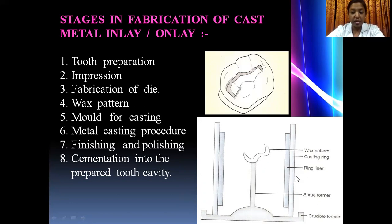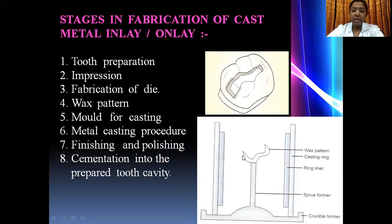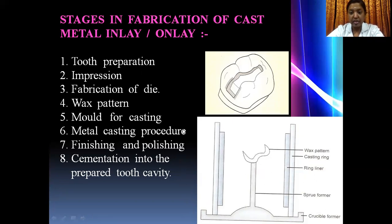Once the wax pattern is obtained, you place the wax pattern inside the crucible former and assemble it in the casting ring along with the casting ring liner, sprue, sprue former, and crucible former. Once placed in the casting ring, you pour your investment material. Once it sets and hardens, the casting ring along with the invested wax pattern is placed directly into the furnace, where the wax is melted out, creating an empty mold for casting.